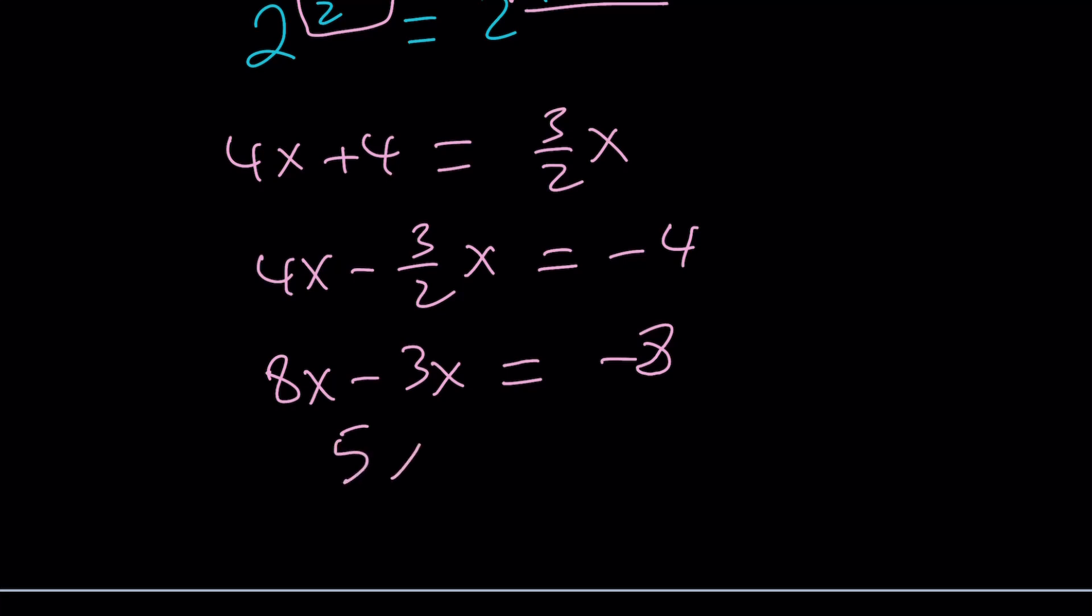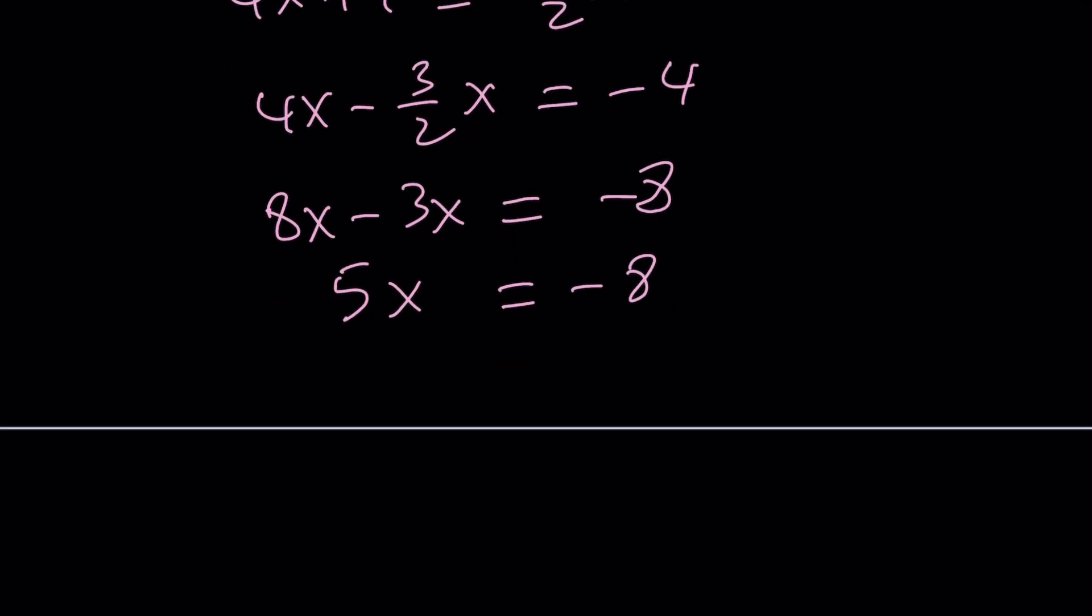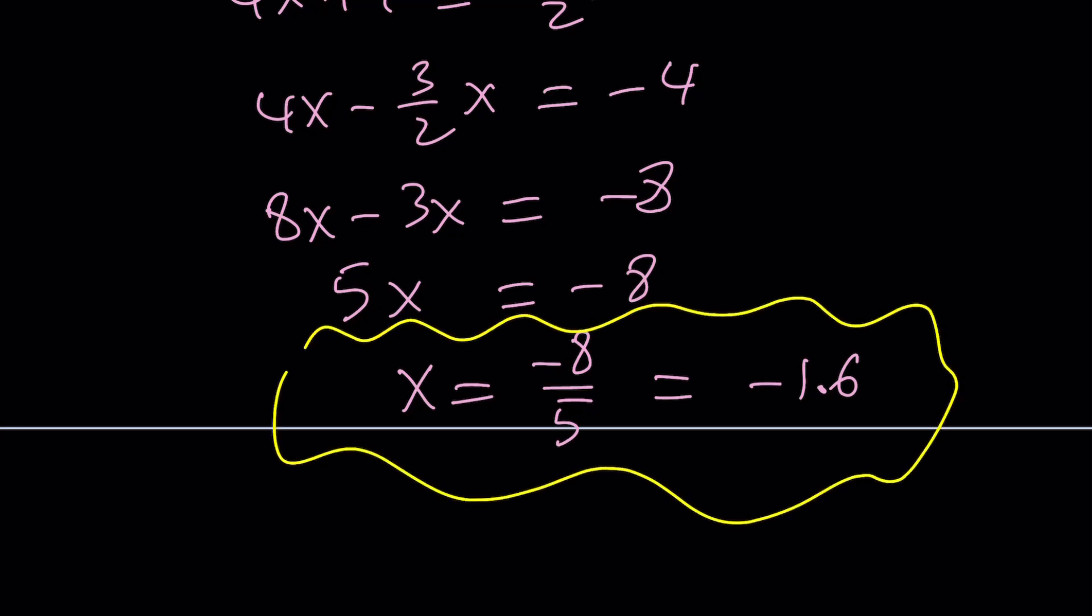And then obviously this means 5x is negative 8, and that means x is equal to negative 8 over 5. Some people like decimals. We write it as negative 1.6. So that seems to be the real solution, and that is the only real solution to this equation.